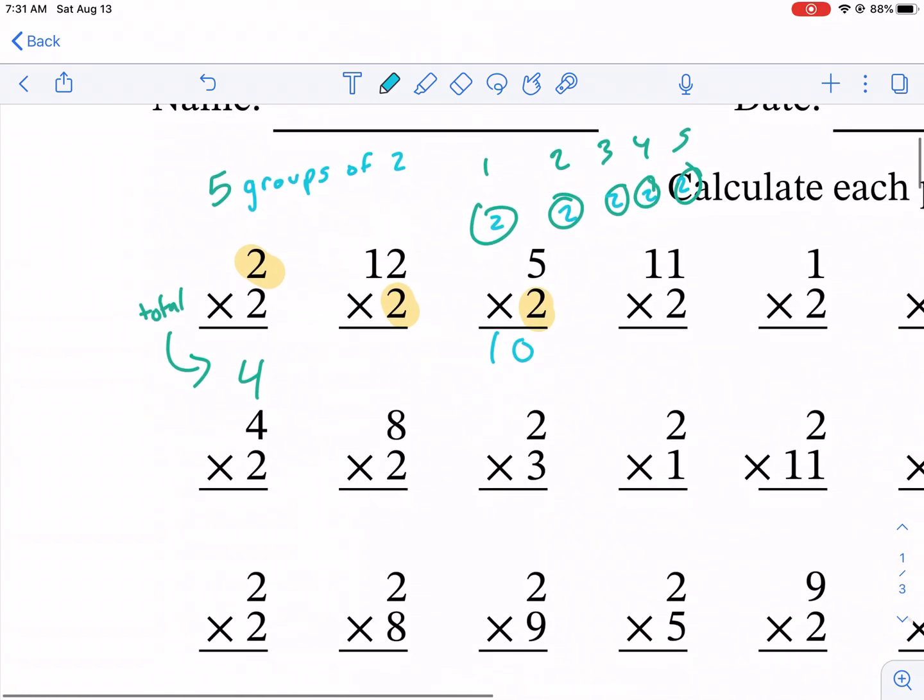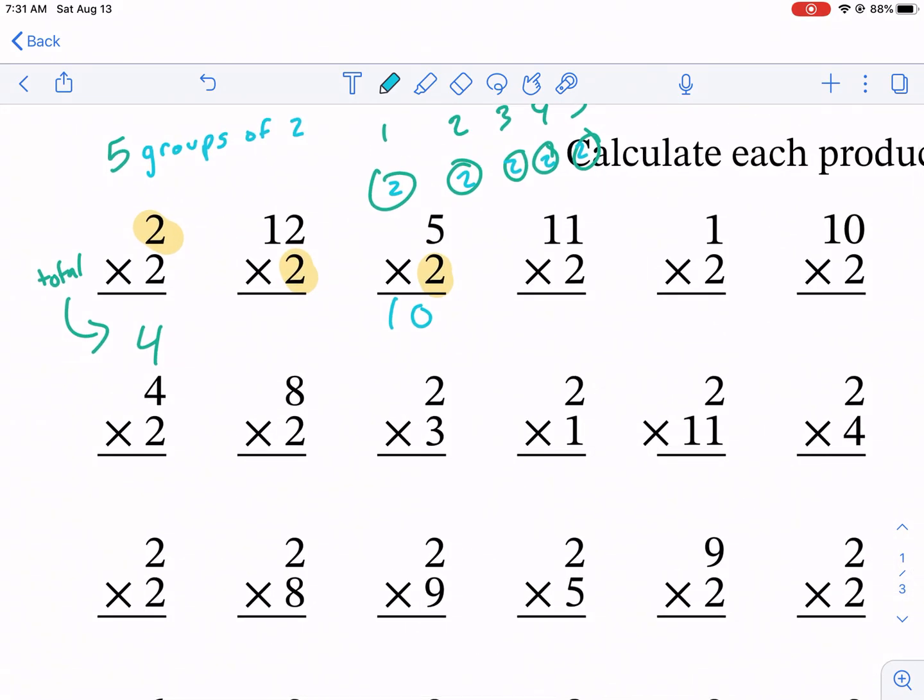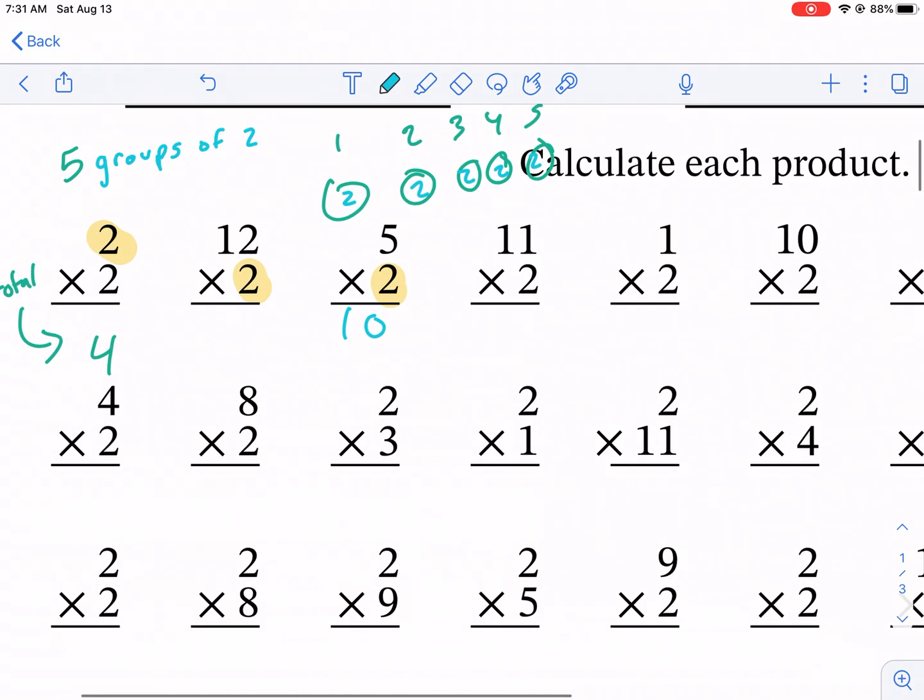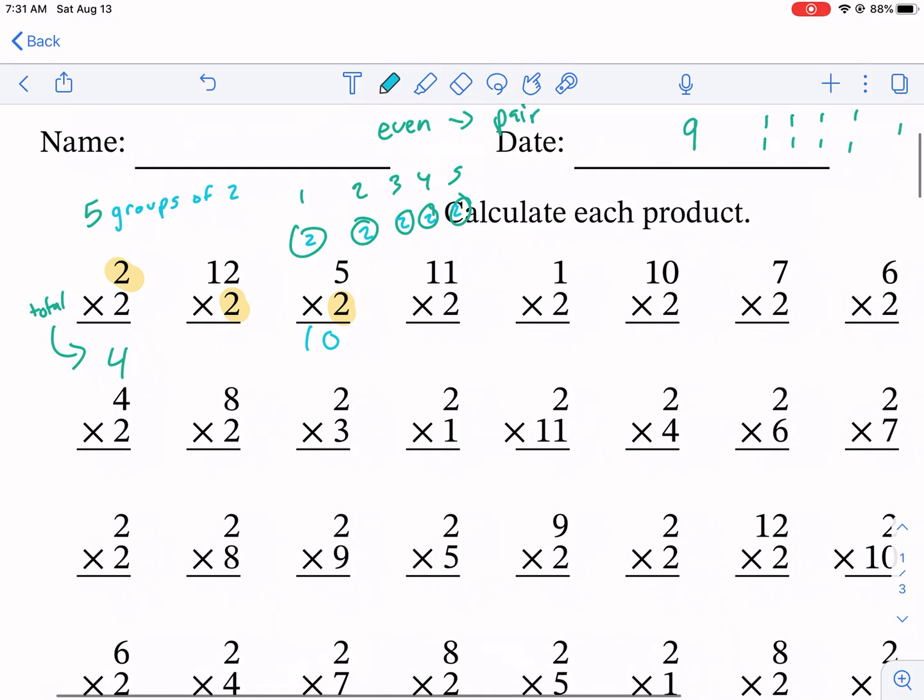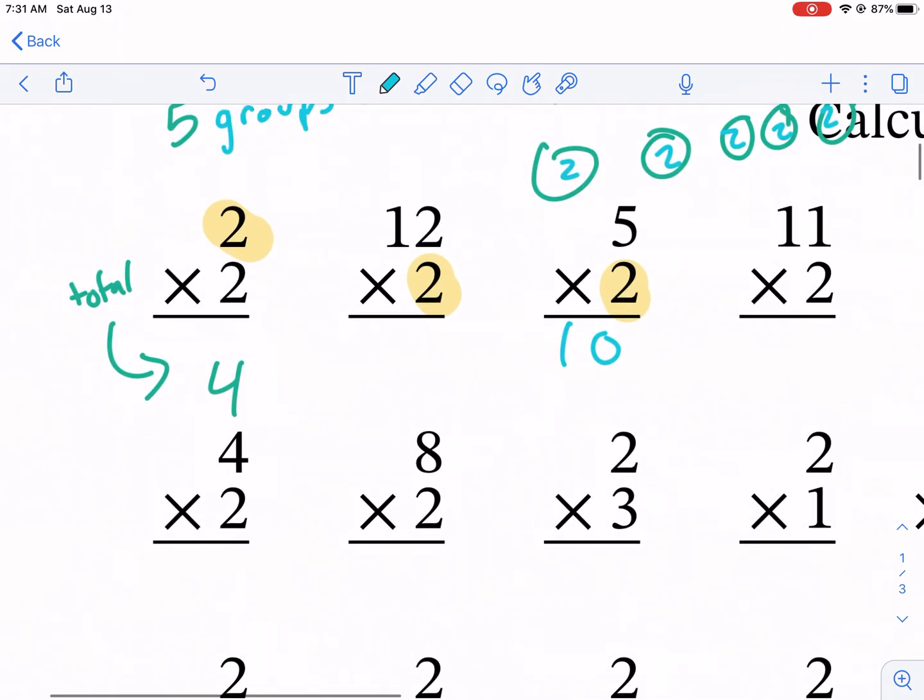Some of these smaller single-digit numbers like fives all the way through nine, you're going to have to memorize. But some of these other ones, there's a little bit of a trick with these two-digit numbers. You think it's hard, but it's really not that bad. For example...